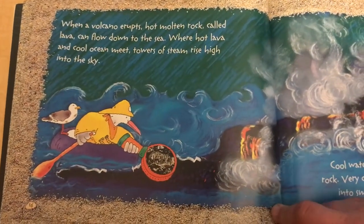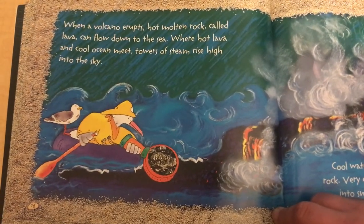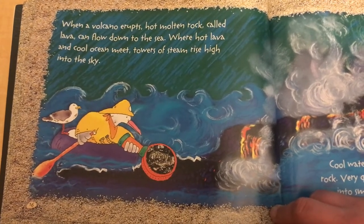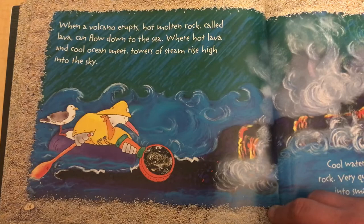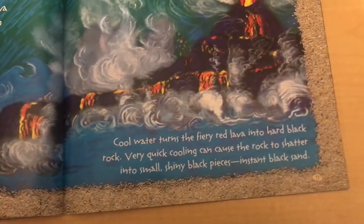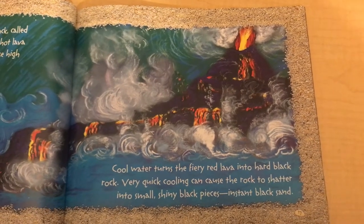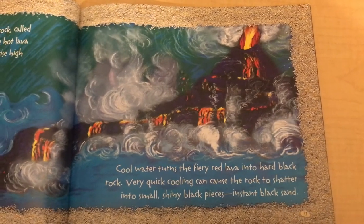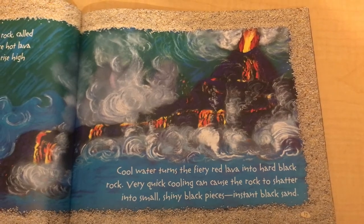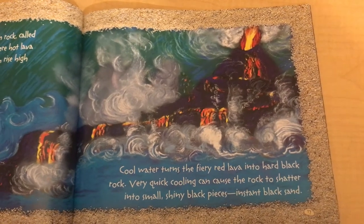When a volcano erupts, hot molten rock called lava can flow down to the sea. Where hot lava and cool ocean meet, towers of steam rise high into the sky. Cool water turns the fiery red lava into hard black rock. Very quick cooling can cause the rock to shatter into small shiny black pieces — instant black sand.